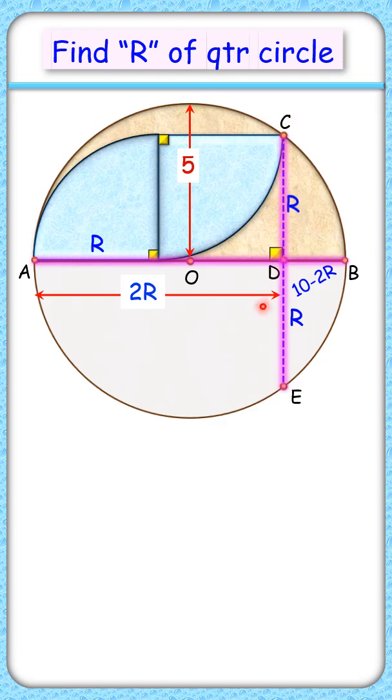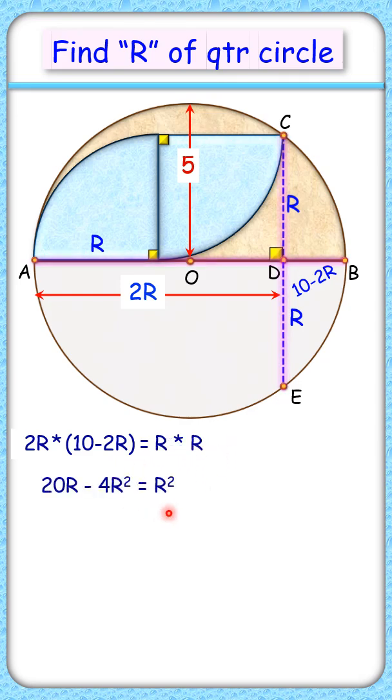Applying the intersecting chord theorem, we get AD times DB equals CD times DE. Putting the values here, AD is 2R and DB is 10 minus 2R. CD and DE are R and R. Here, opening the bracket on the left-hand side and simplifying this equation, we get the value of R as 4 cm. And that's our answer.